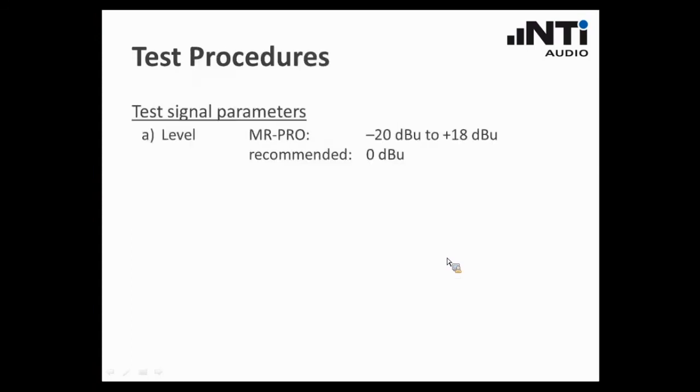Second, talking about the test parameters. Now referring to the MR-PRO signal generator from NTI-Audio, you have a certain range where you can adjust the output voltage of the test instrument. We recommend to start at 0 dBu, which is, if you are not so acquainted with this unit, it is in a range of about 1 V, a little bit less, but it is a good starting voltage. Second, talking about the frequency, we would recommend to start at about 1 kHz, but as mentioned before, because the impedance and the power of the system depends on the frequency, you may also adjust other frequencies in this range from 30 Hz to 10 kHz.